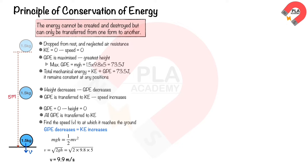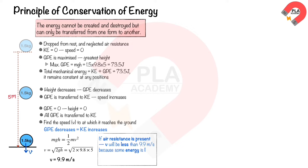If air resistance is present, the speed v at which it reaches the ground will be less than 9.9 m/s, because some energy is lost to thermal energy due to air resistance.